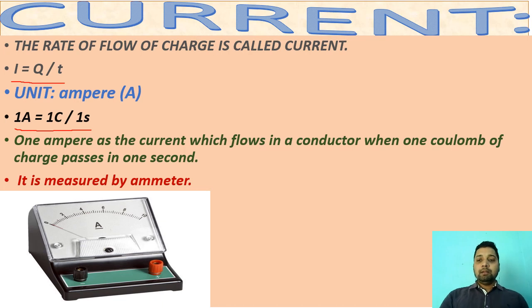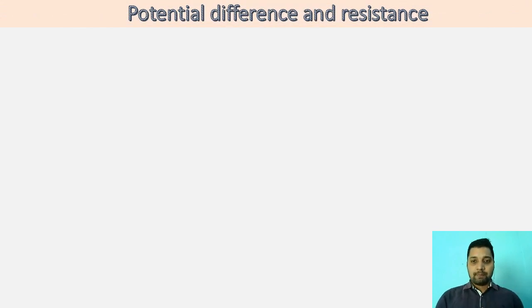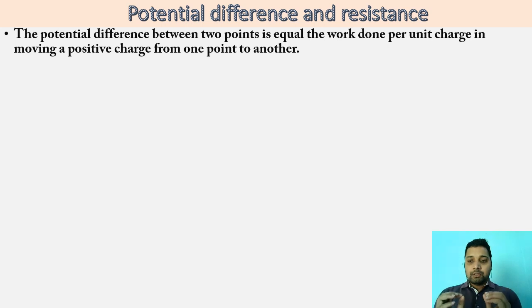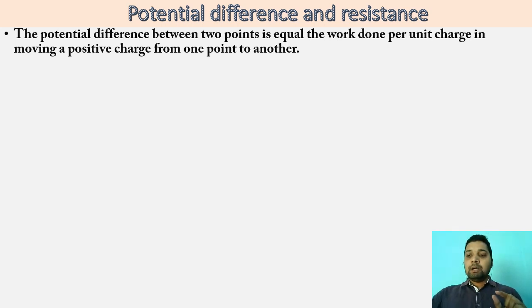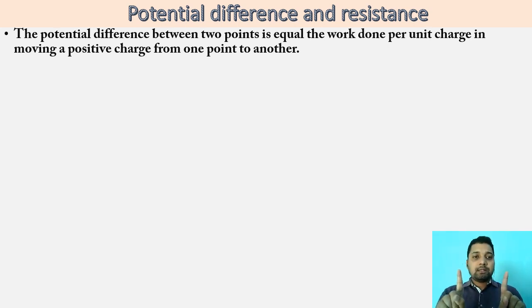Let's discuss about potential difference and resistance. Whenever charge particles move from one part to another, they do a certain amount of work. This work done while moving a charge is called potential. So here the term is potential difference. If a charge comes from a source or an infinite point, or from a larger distance, to a first point, it does a certain amount of work. When the charge comes from the same source to a second point, it does another amount of work. The difference of work between these two points is called potential difference.